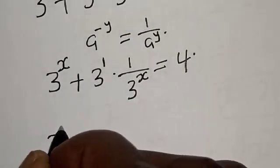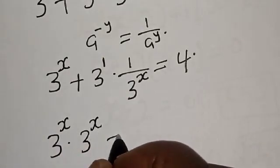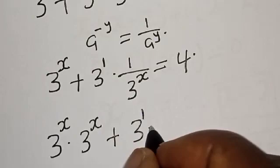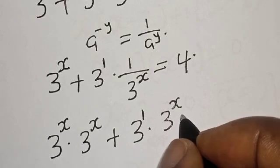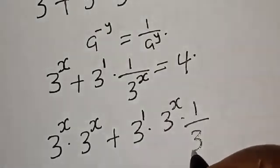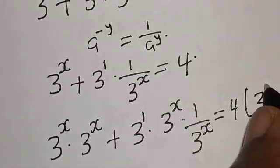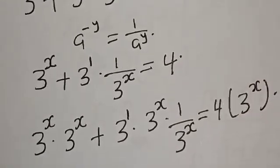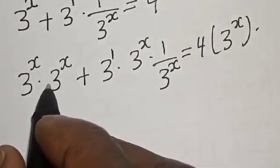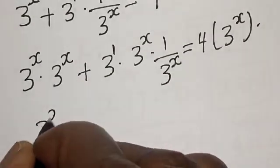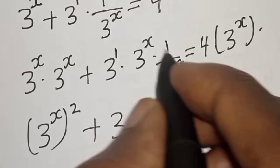Then we have 3 raised to power 1 multiplied by 3 raised to power x plus 3 raised to power 1 multiplied by 3 raised to power x multiplied by 1 over 3 raised to power x is equal to 4 multiplied by 3 raised to power x. Then 3 raised to power x plus 3 raised to power x plus 3 — this one will cancel this.